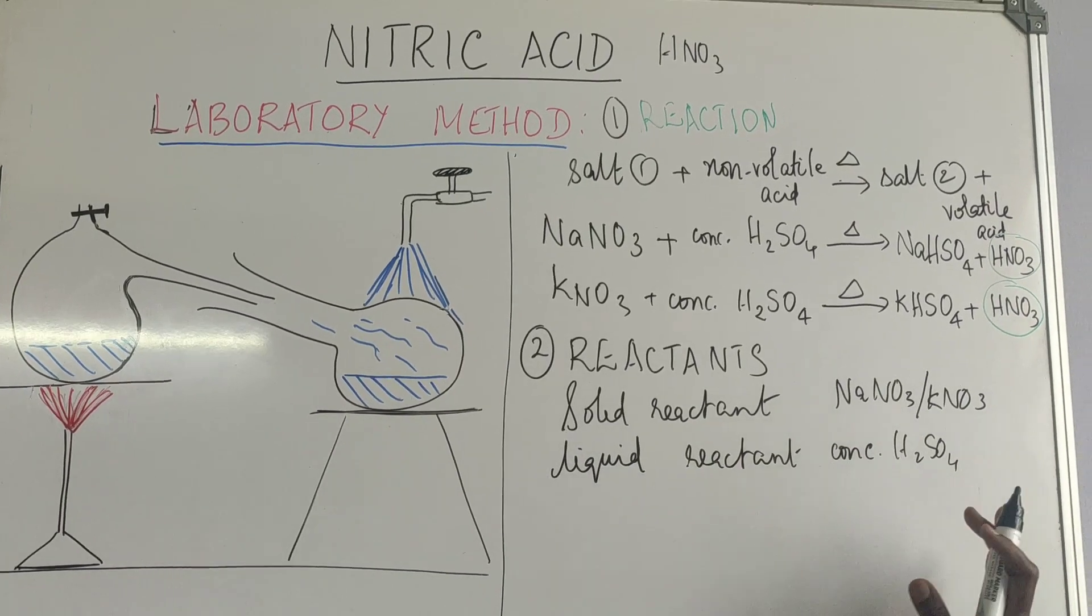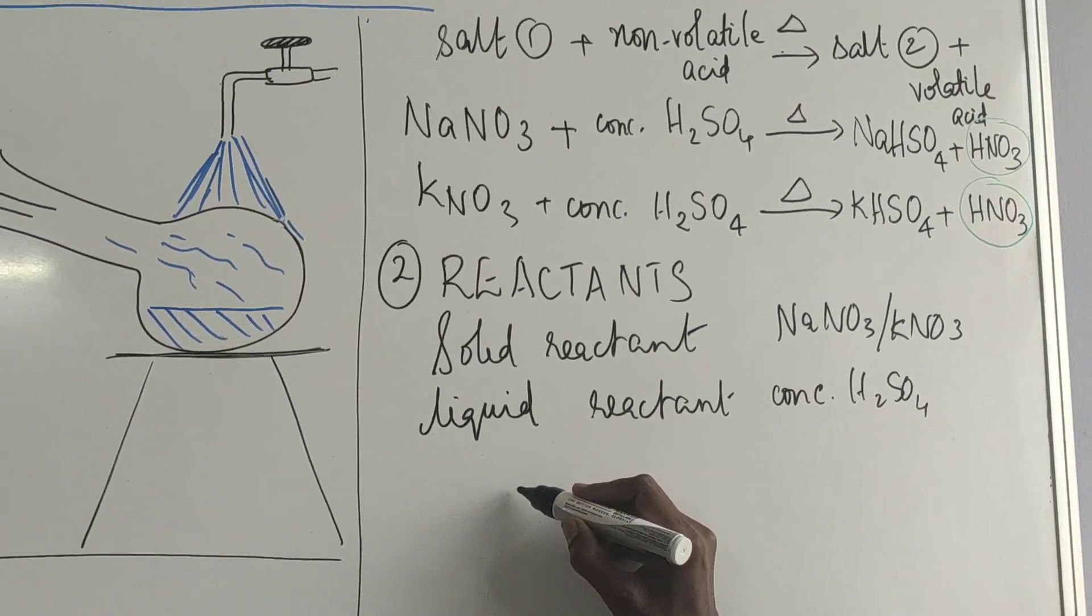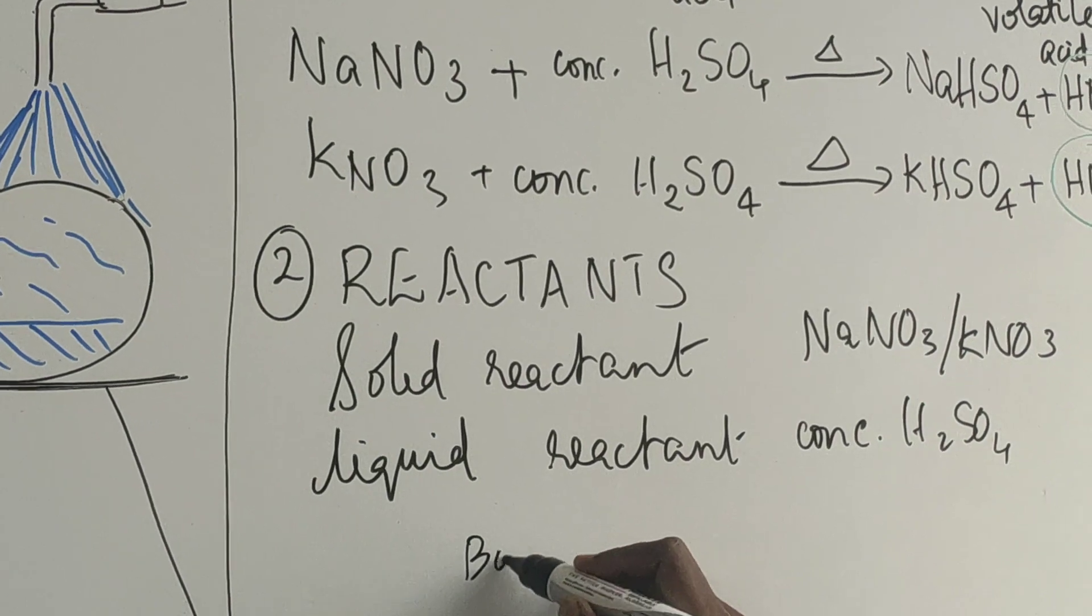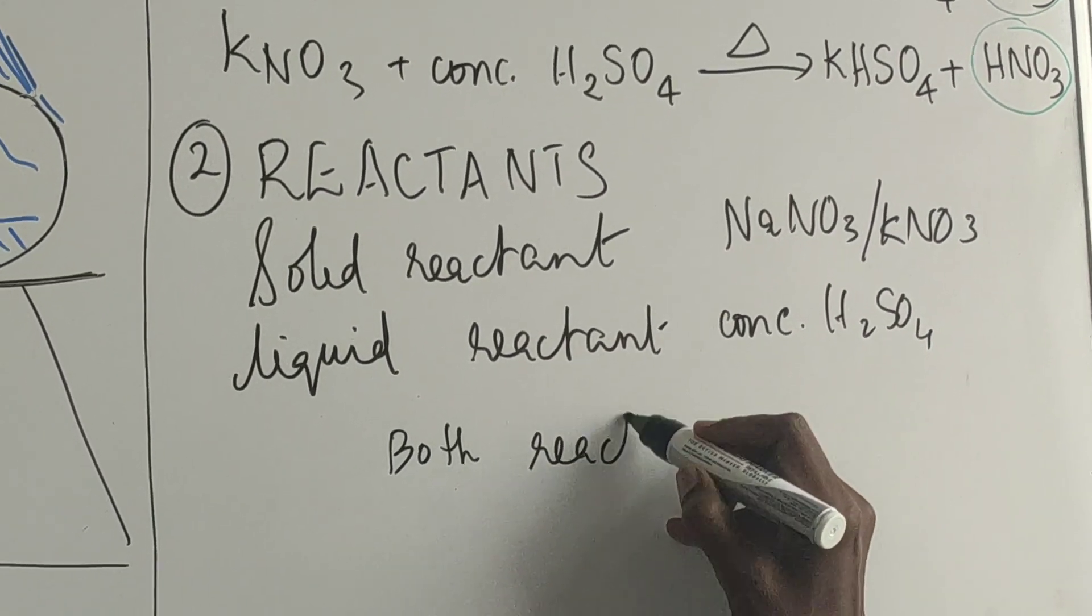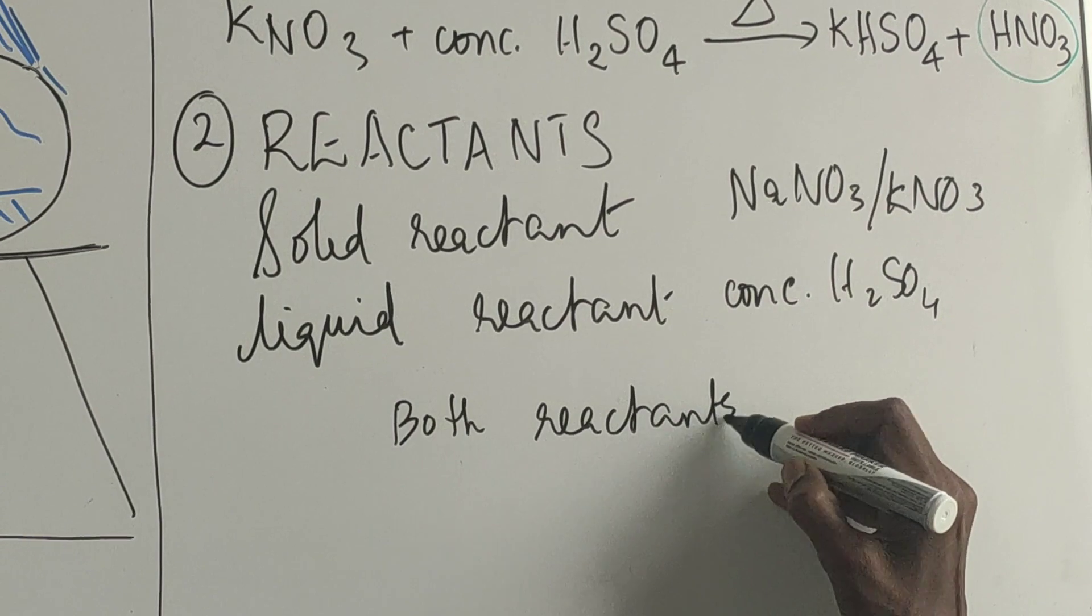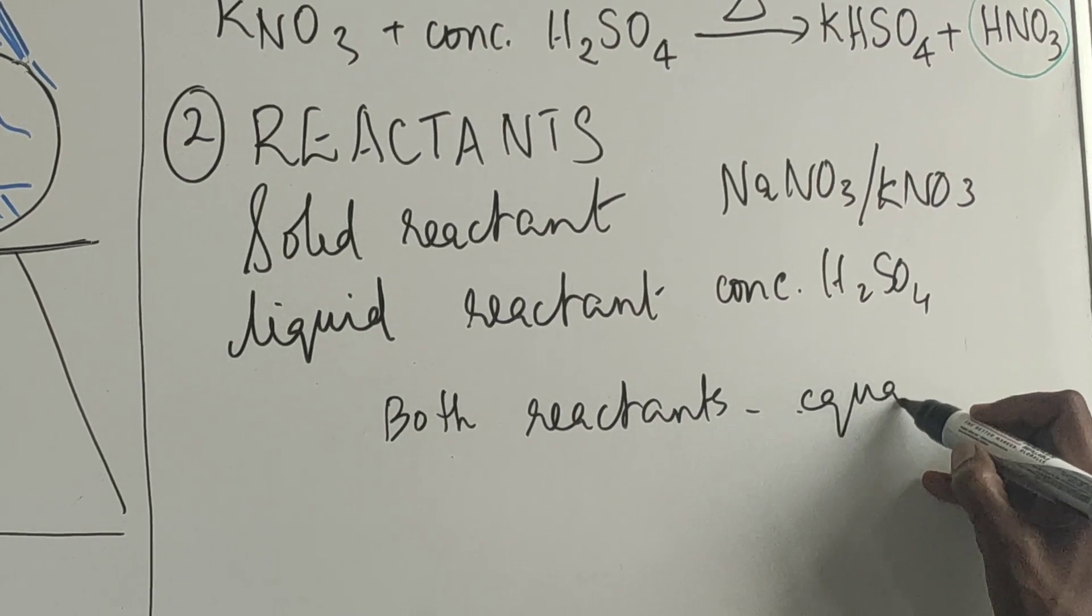So these are the reactants. And these two, both reactants, the ratio should be 1 is to 1. Equal measure, equal amounts.